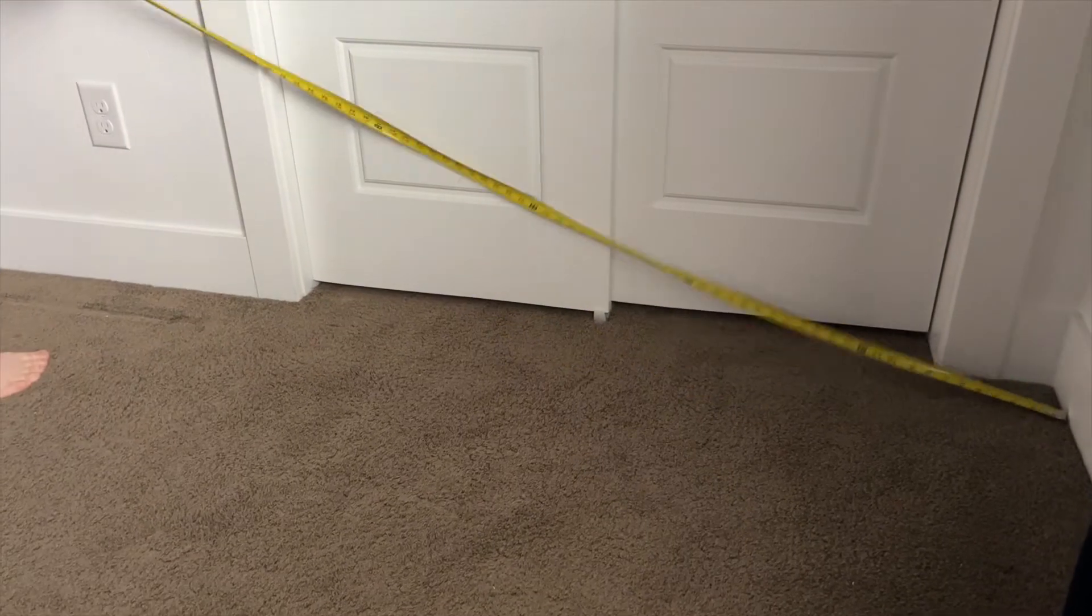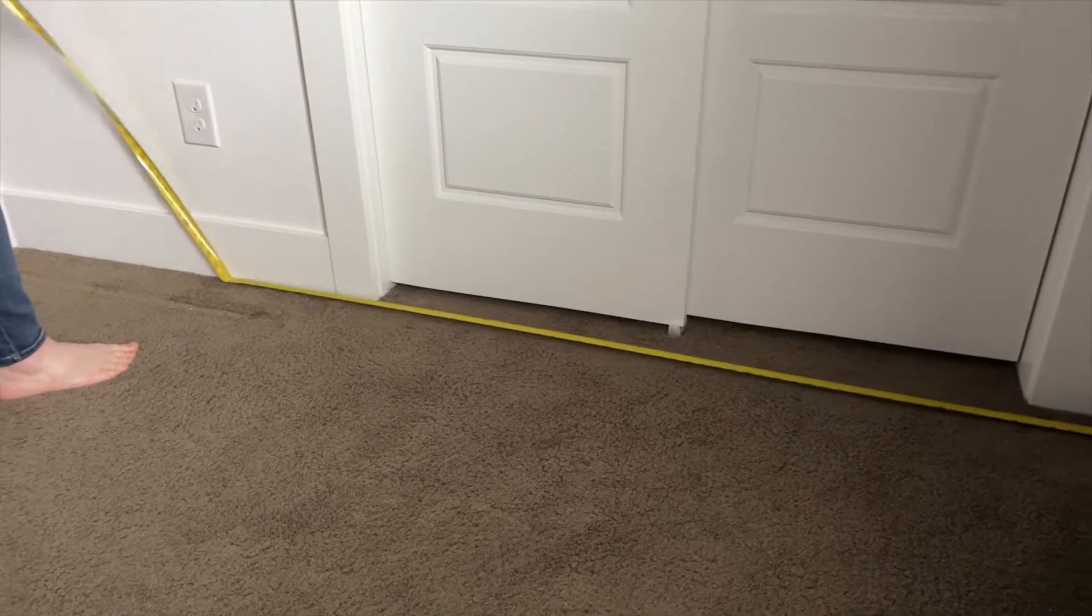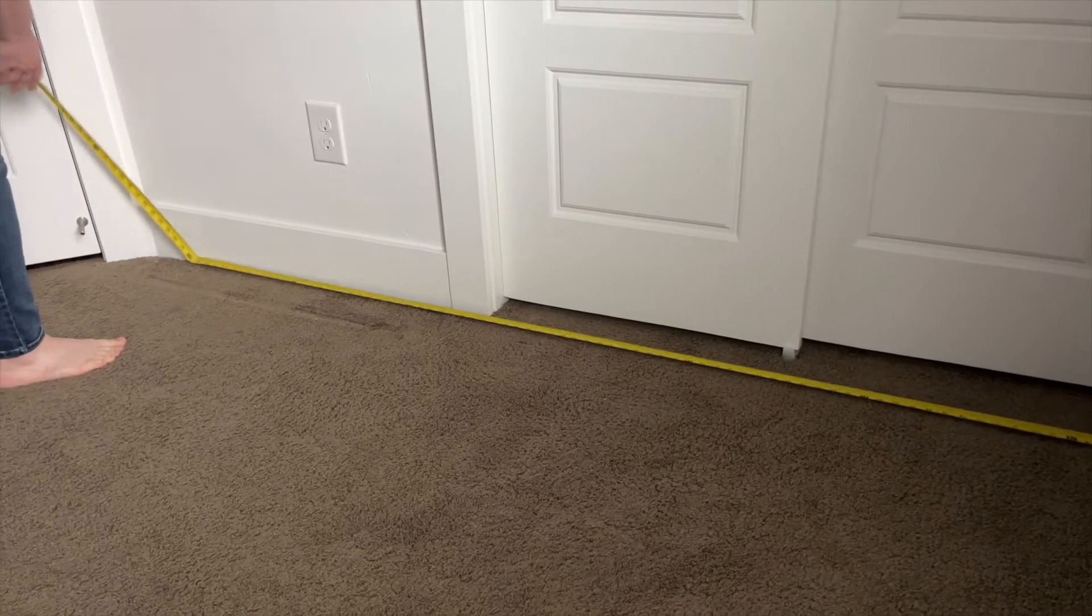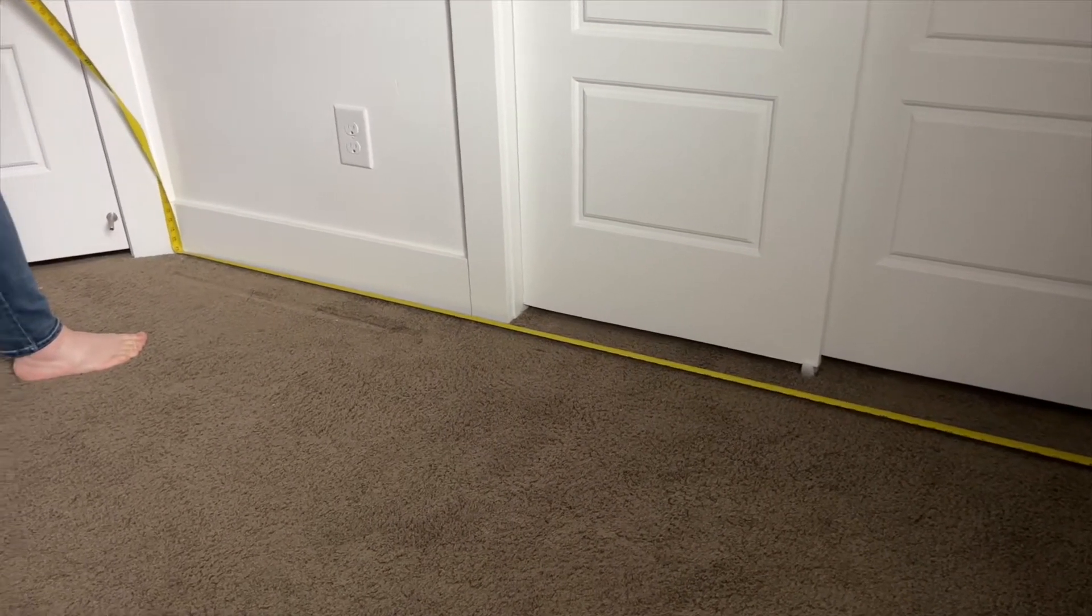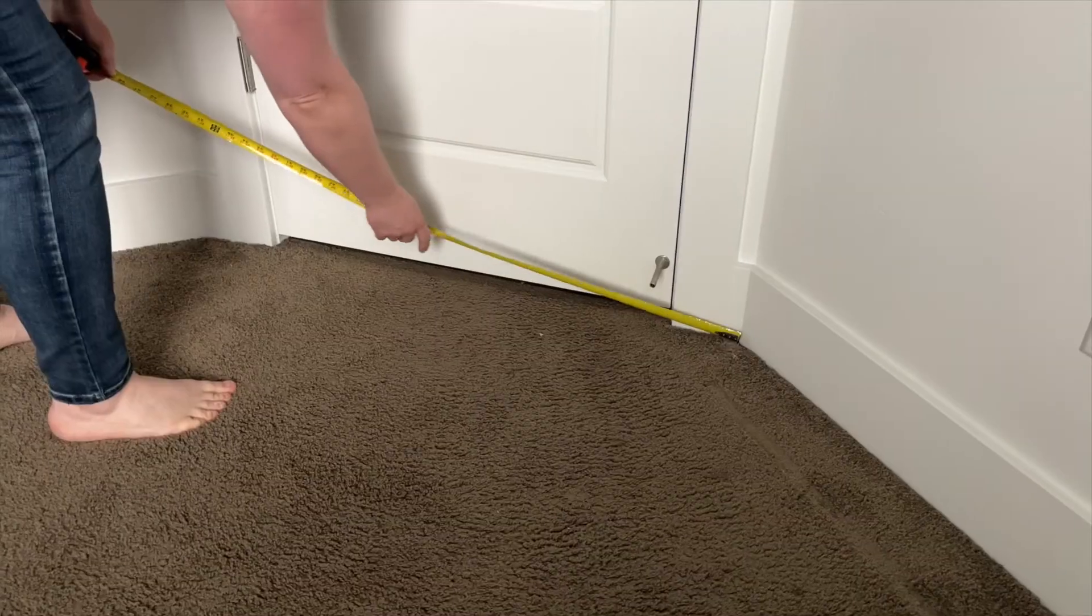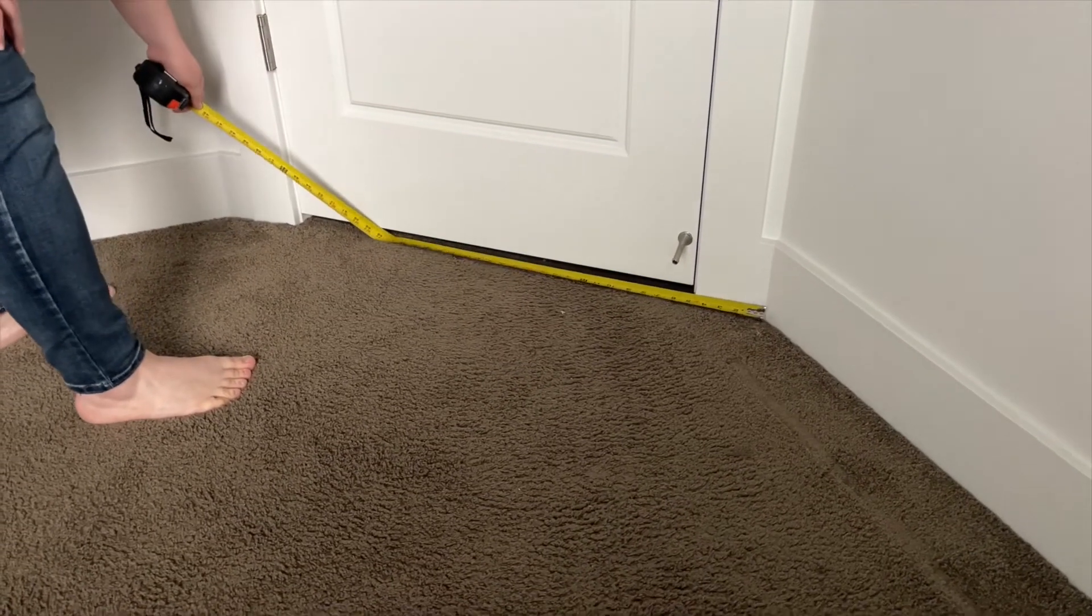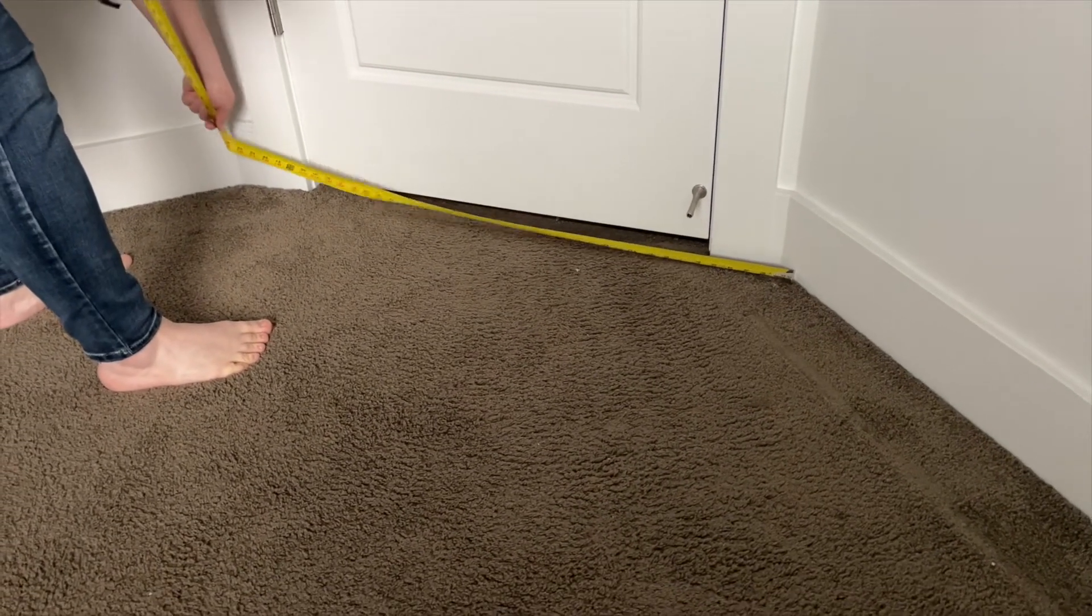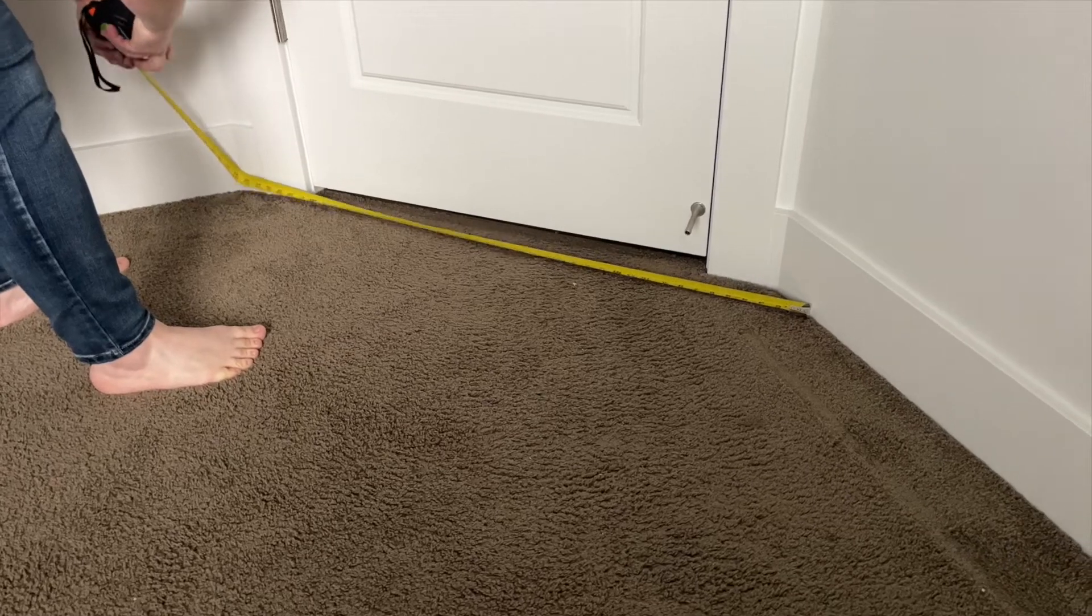The first thing you'll want to do is measure the space you're putting them in. Now Steph wanted it to go around the entire room, which was about 45 feet, so she ordered 50 feet of lights. Next you'll want to clean the wall surface where you'll be putting them. Just use a wet cloth or a degreaser to make sure that that adhesive will stick.